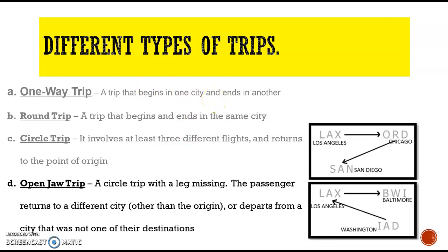For example, Los Angeles going to Chicago, going to San Diego — that is open jaw, meaning the beginning city, Los Angeles, is not the ending city because the ending city is San Diego. Another example: Washington going to Los Angeles, going to Baltimore — a different city for beginning and ending.